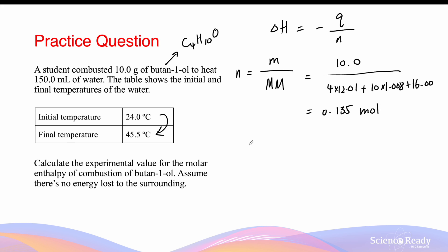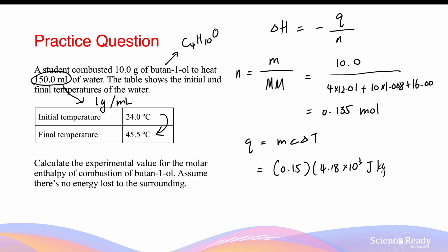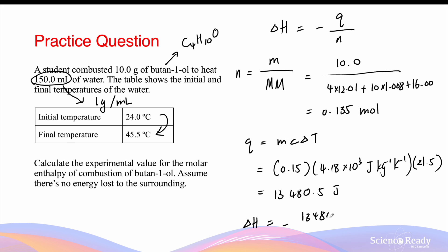We can also use the temperature change to calculate the amount of energy that's absorbed by the water, and this is given by the formula Q equals to mc delta T. The mass of water is given by its volume. Recall that the density of water is 1 gram per 1 mL, which means in 150 millilitres of water, there are exactly 150 grams. So here I'll be using 0.15 kilograms of water. The specific heat capacity is 4.18 times 10 to the power 3 joules per kilogram of water and per kelvin of temperature change. Because the unit of the heat capacity is per kilogram, this is the reason why I've used kilograms for the mass of water, and this is multiplied by the change in temperature, which is 21.5 kelvins or degrees Celsius. This gives an energy of 13,480.5 joules.